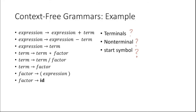So what are the terminals here? As I told you, all identifiers are terminals, so 'id' is one terminal. We also have opening bracket, closing bracket, and arithmetic operators like plus, minus, multiplication, and division. These are the terminals. What are the non-terminals?